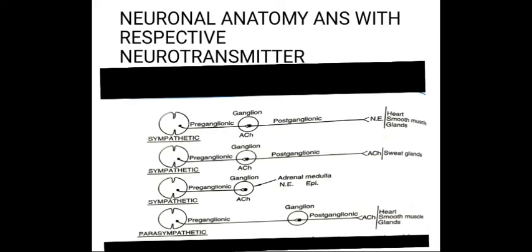Now we will see this figure showing the neuronal anatomy of the autonomic nervous system with respect to neurotransmitters.